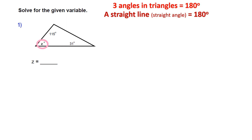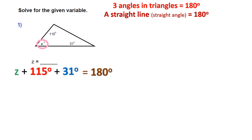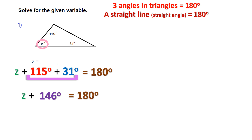Looking at my triangle in question one, I'm looking for Z. I'll create my expression out of my three angles: Z plus 115 degrees plus 31 degrees. I'll make an equation because I know what it has to equal — 180. Then I do the math: I add the two known angles, 115 and 31, to get 146 degrees. So Z plus 146 equals 180.